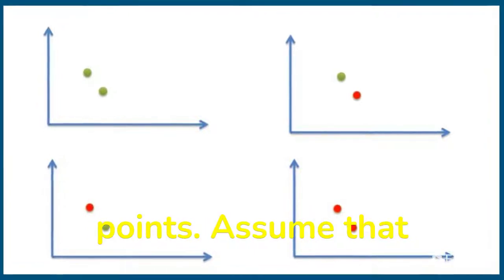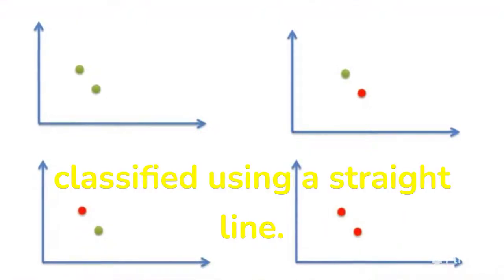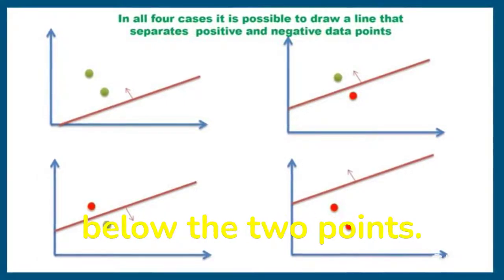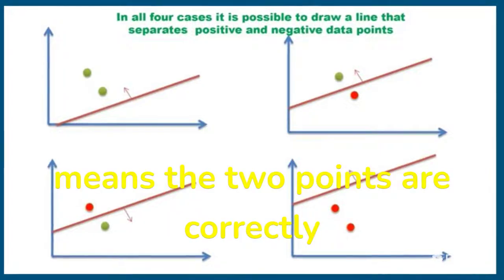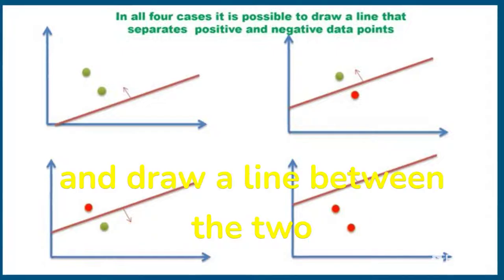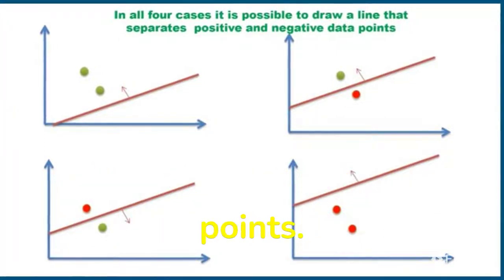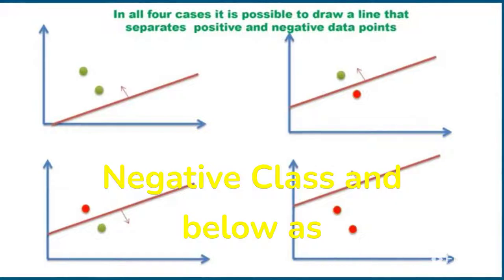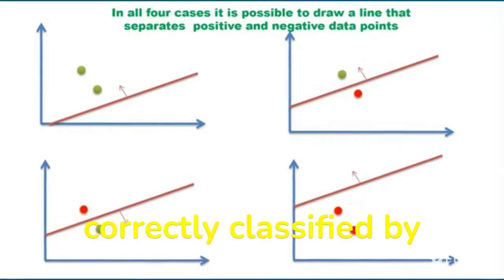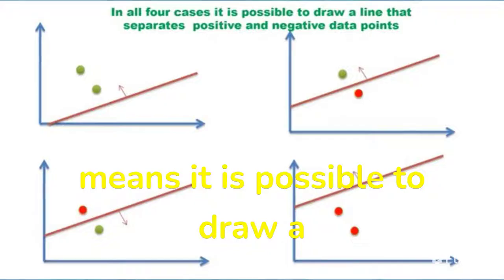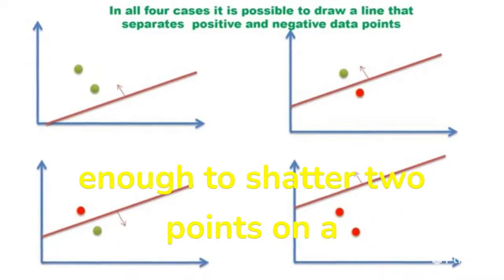Let us go back to the scatter plot with two points. Assume that the classifier is a straight line. Let us check whether the two data points can be correctly classified using a straight line. In case one, draw a straight line below the two points. The model classifies all points above the line as positive class and below the line as negative class — the two points are correctly classified. In cases two and three, draw a line between the two points and the points are correctly classified. In case four, the data points are correctly classified by drawing the line above the two points. It is possible to draw a line that separates positive and negative points in all four cases.